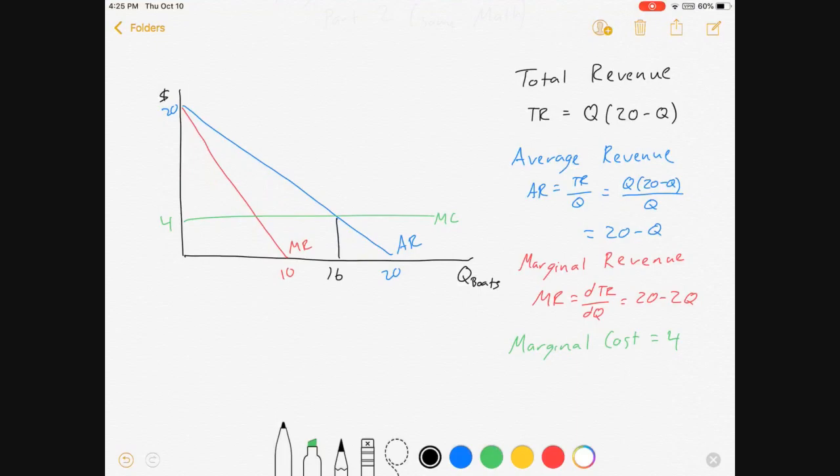Let's see. So marginal cost equals marginal revenue. That's 4 equals 20 minus 2Q. And that comes out to be Q equals 8.